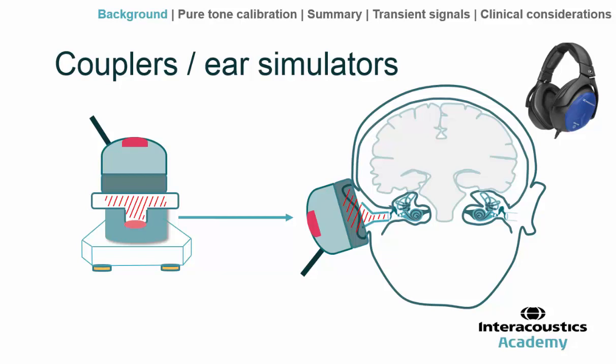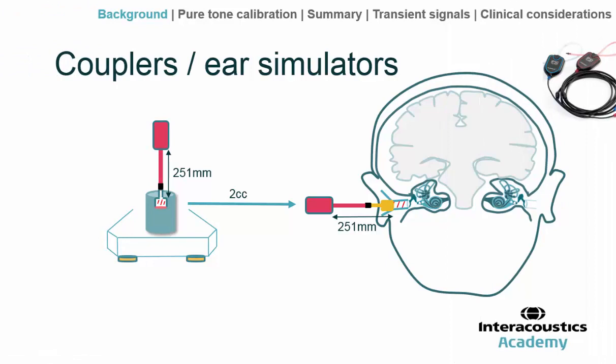For the circumoral headphone, which encapsulates the whole pinna, the residual ear canal volume is somewhat greater than 6cc. We take the same coupler but apply an adapter to simulate that increased volume. For insert-style headphones, the sponge is inserted into the ear canal so the residual volume is less than 6cc — we would typically use a 2cc cavity for inserts.